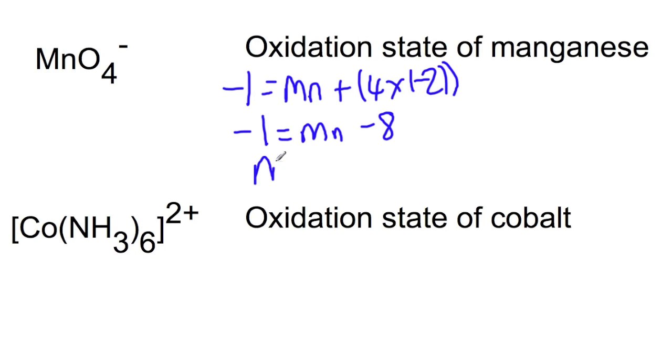If we take the eight to the other side, we get manganese in an oxidation state of plus seven, where it has lost all of its two electrons.